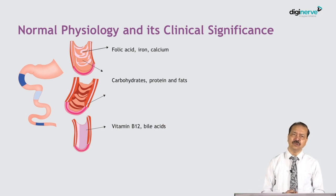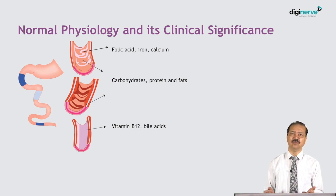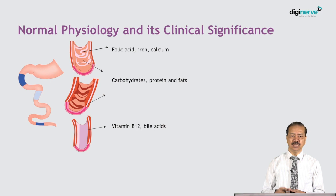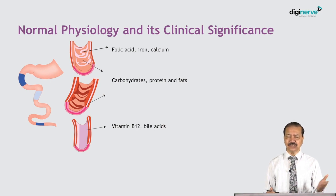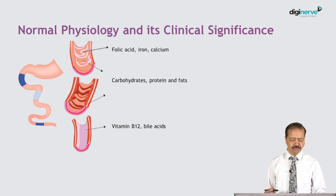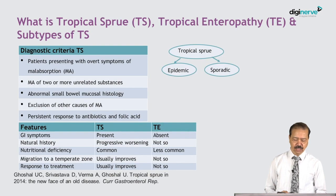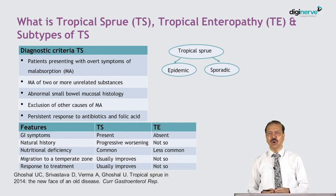Vitamin B12 and bile acids are absorbed from the ileum. Therefore, if you find vitamin B12 malabsorption — for example, subacute combined degeneration of the cord clinically — you know the ileum is also involved. This allows you to determine clinically the extent of involvement, from the duodenum to the ileum.